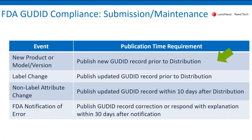For manufacturers that have already submitted their portfolio and have a lot of records in the FDA, a couple of words about maintenance. In the event that you have a new version or model of a particular product, you do need to publish a new record to the GUDID prior to distribution. If there's a change to the label values, you need to submit those updates to the FDA GUDID prior to distribution. If there's an attribute that is not on the label, then you have a grace period of 10 days after distribution to make sure that the GUDID database is updated.